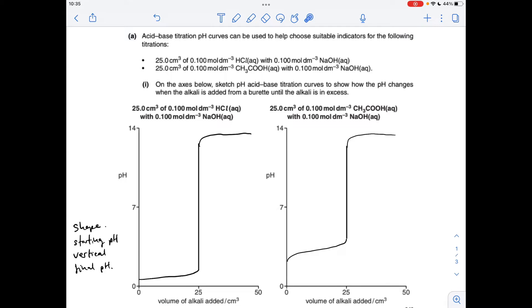The weak acid strong base is slightly different, it's going to start at a slightly higher pH. The vertical section's kind of shunted up a bit, but it's still going to end quite high, so it needs to have that shape there. Already touched on the starting pH, but just make sure that your strong acid one starts at a lower pH than your weak acid one.